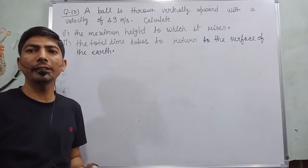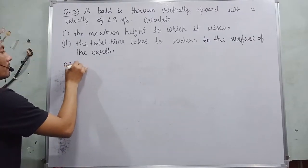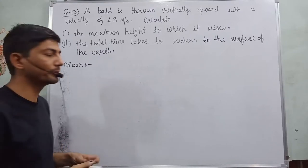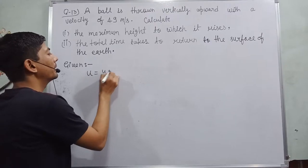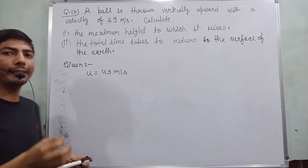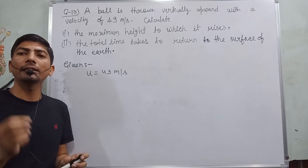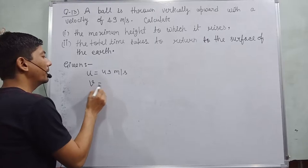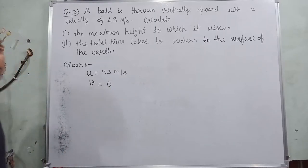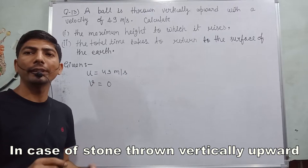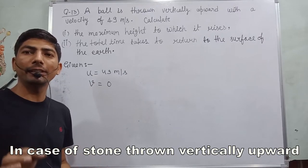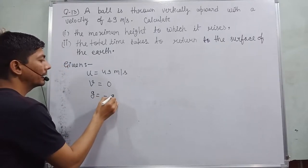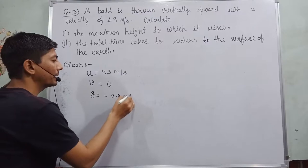So first, I write what is given in this question. Initial velocity which is represented by u is given. How much? u is equal to 49 meter per second. In case of stone which is thrown vertically upward, the final velocity at maximum height will be zero. Final velocity is represented by v which is equal to zero. In case a stone is thrown vertically upward, the gravitational acceleration, or acceleration due to gravity, is equal to g equals minus 9.8 meter per second square.